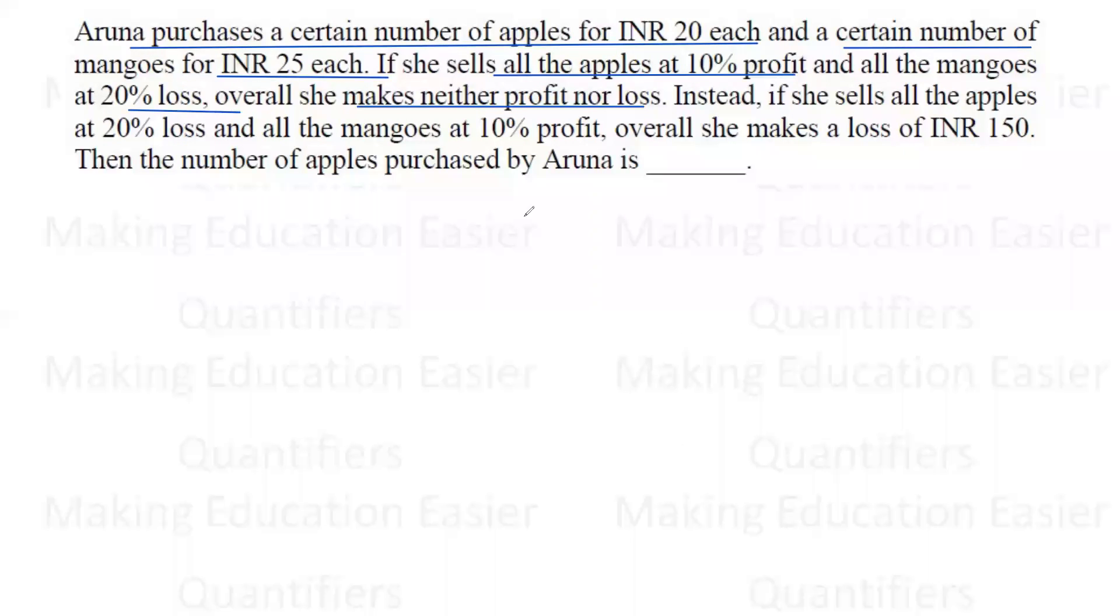Let us assume the number of apples as X and number of mangoes as Y. So the total cost price would be 20X + 25Y.